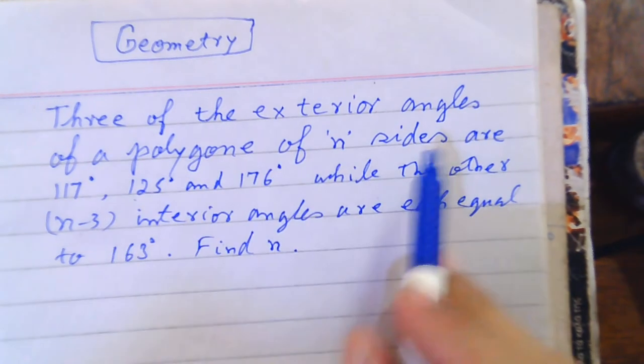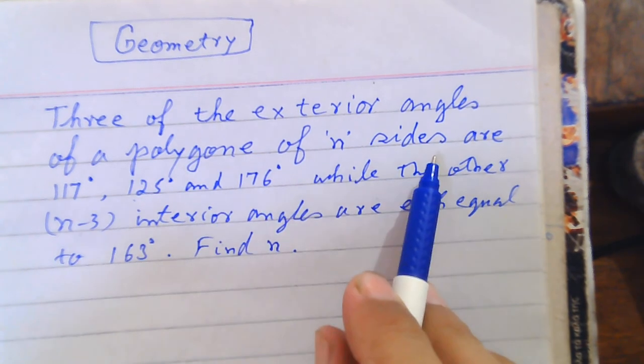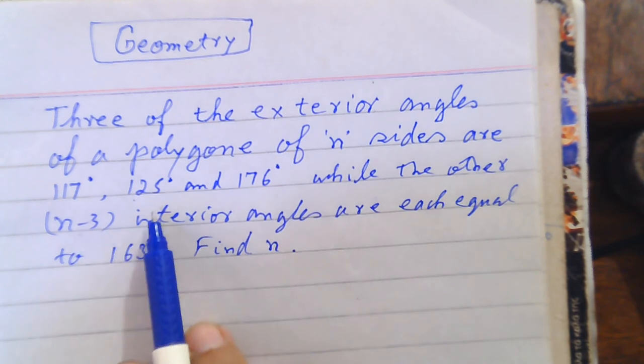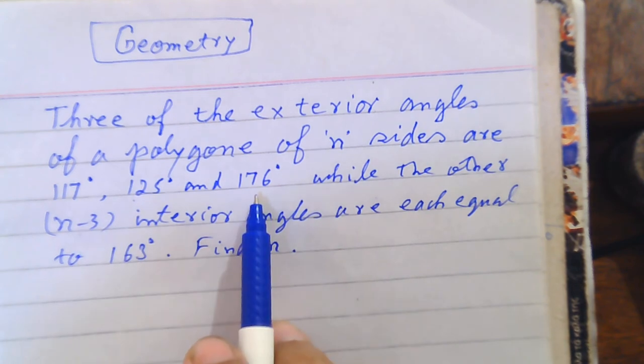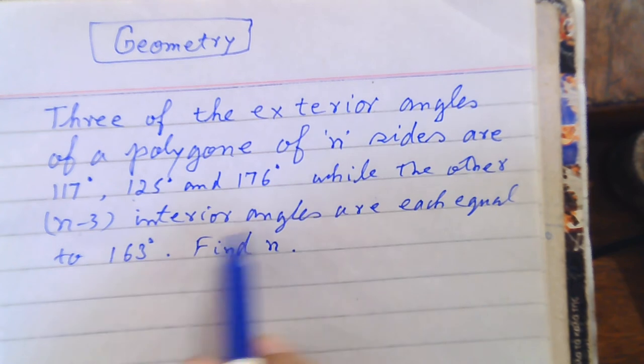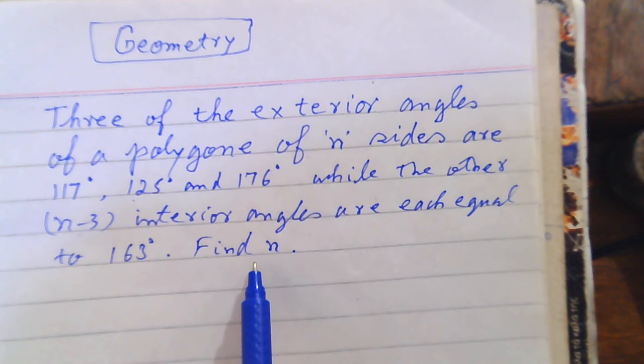Three of the exterior angles of a polygon of n sides are 117, 125, and 176, while the other n minus 3 interior angles are each equal to 163 degrees. Find n.